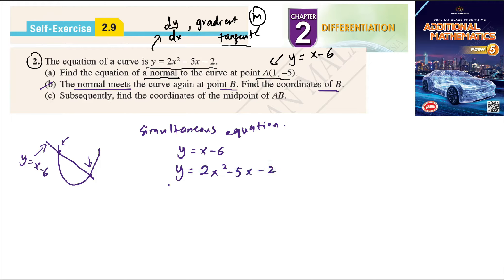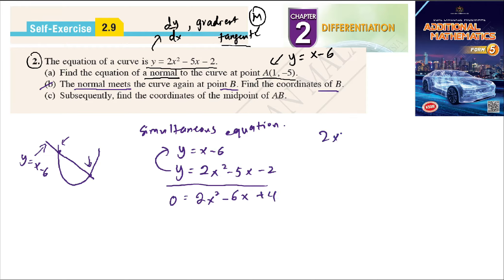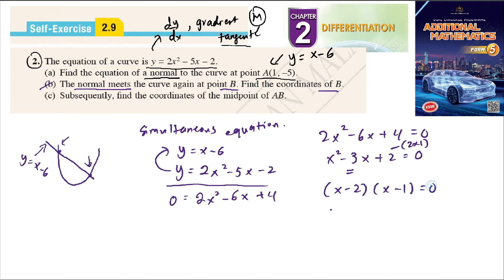Subtracting the two equations to eliminate y: 0 = 2x² - 5x - x - 2 - (-6), which gives 0 = 2x² - 6x + 4. Dividing everything by 2: x² - 3x + 2 = 0. Factorising: (x - 2)(x - 1) = 0, so x = 2 or x = 1.